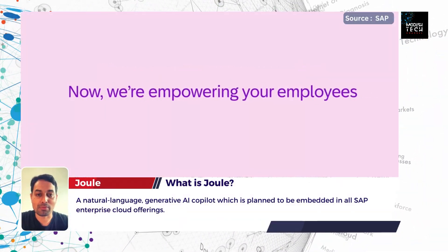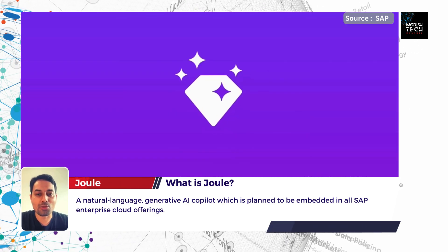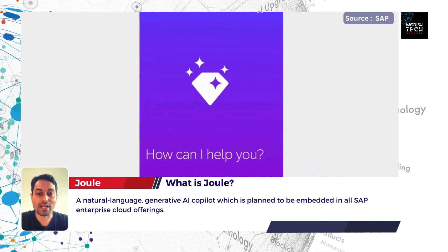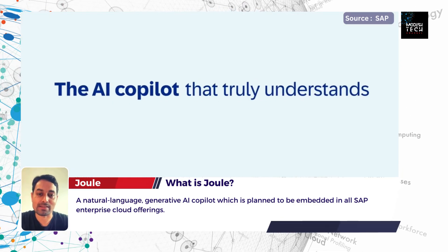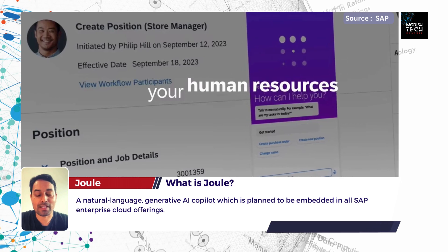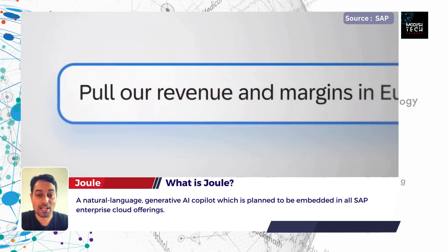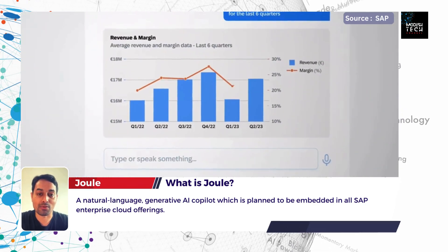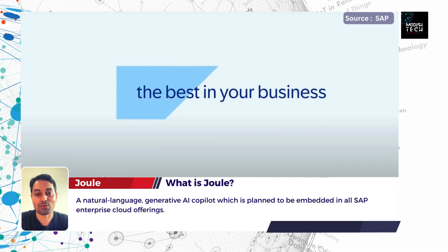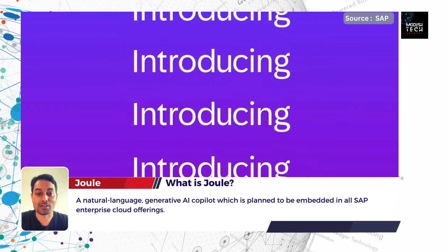Let's understand what Joule is before going into the details of this particular program. Joule is basically your digital assistant, which can help you interact with your SAP systems. It is planned to be embedded into all of the SAP cloud offerings. In short, this is your natural language, gen AI powered chatbot — or you can say the co-pilot — which can do things for you very easily and efficiently. You just need to enter your prompts.